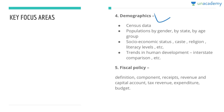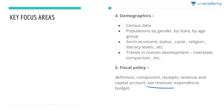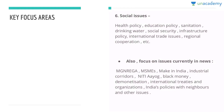Demographics includes census data, population by gender, by state, by age group, socioeconomic status, caste, religion, literacy levels, trends in human development, and interest rate comparisons. Under fiscal policy, cover definitions, components, receipts, revenue, capital accounts, tax revenue, expenditure, and budget — all very important areas to thoroughly study.